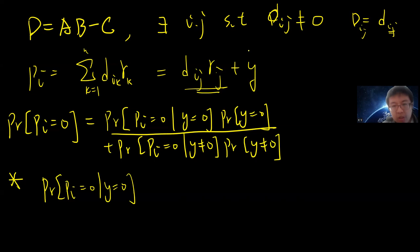What is the probability of P_i equals 0 and y equals 0? So if y is 0 and P_i is 0, that means that since D_ij is non-zero, R_j must be 0. But the probability that you choose R_j equals 0 is a half. It's basically half.